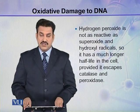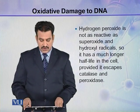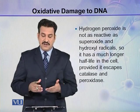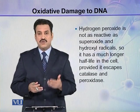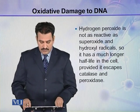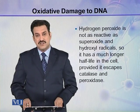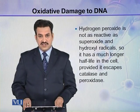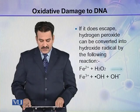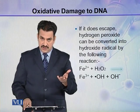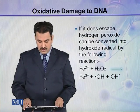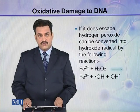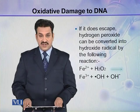Hydrogen peroxide (H₂O₂) is not as reactive as superoxides and hydroxyl radicals, so it has a much longer half-life in the cell. However, enzymes like catalase and peroxidases prevent hydrogen peroxide from persisting in the cell. If it escapes these enzymes, hydrogen peroxide can be converted into hydroxyl radicals through a reaction in which iron and hydrogen peroxide react to produce hydroxyl radicals.